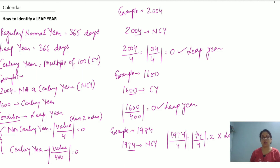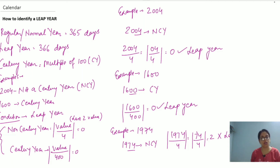To summarize: a regular year has 365 days, a leap year has 366 days, and a century year is a multiple of 100. First identify whether the given year is a century year or not. If it is a century year, divide by 400; if it is a non-century year, divide by 4. If the remainder is 0 under either condition, it is a leap year.